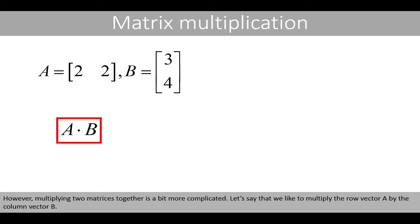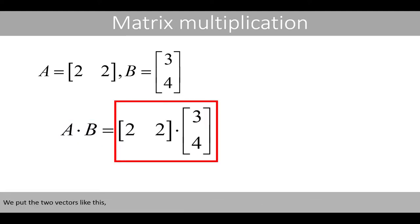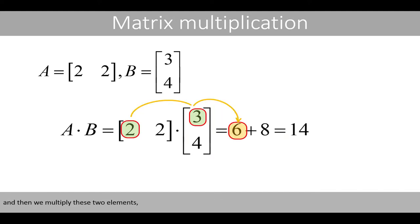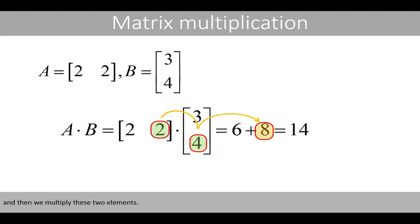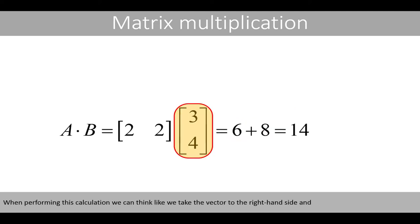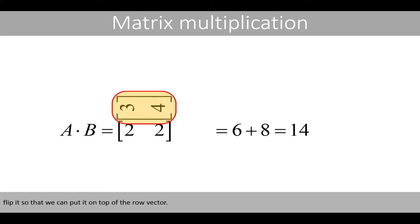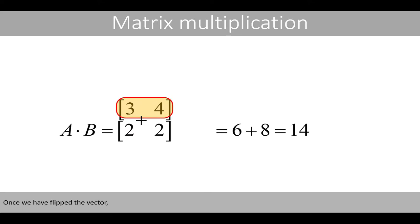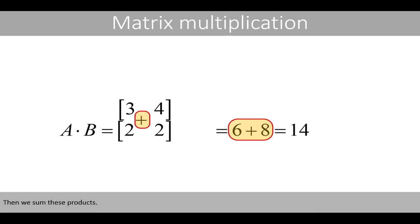However, multiplying two matrices together is a bit more complicated. Let's say we want to multiply the row vector A by the column vector B. We put the vectors together, multiply the corresponding elements, and then sum them. We can think of it as taking the vector on the right-hand side, flipping it so we can put it on top of the row vector, multiplying the numbers together, and then summing those products. Multiplying a column vector by a row vector therefore results in just a number.